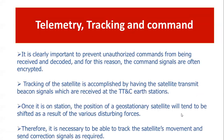Tracking of the satellite is accomplished by having the satellite transmit beacon signals, which are received at the telemetry, tracking, and command station. The position of the geostationary satellite tends to shift due to various disturbing forces such as sun transit outage and other factors, causing changes in altitude and direction. It is therefore necessary to track the satellite's movement and send correction signals as required to keep it in the expected position.